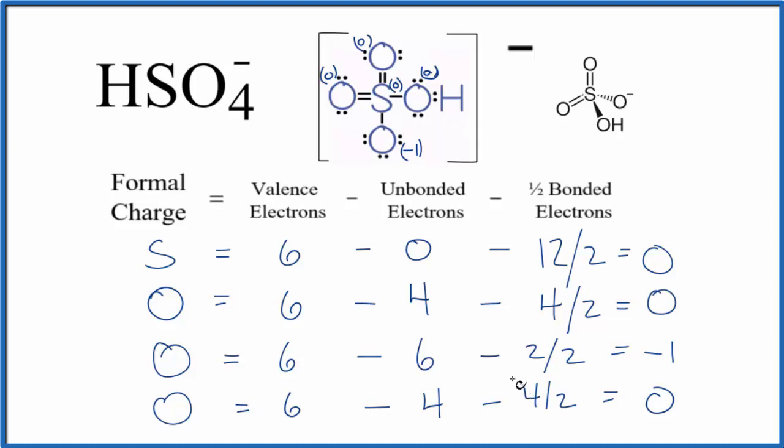So what we find is that everything is zero except for this oxygen with a single bond. This is our double bond, this is our single bond, and this is bonded to the OH. Everything's zero except this one, the single bond. But that makes sense because we have this minus one here, so it needs to match the charge. The formal charge needs to match the charge on the ion.